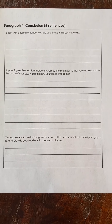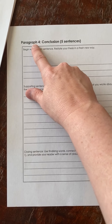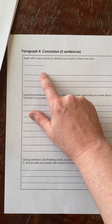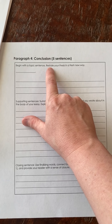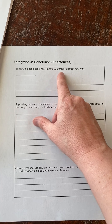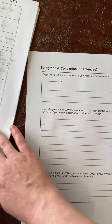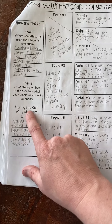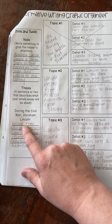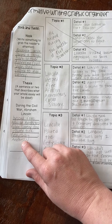I'm going to go ahead and flip the camera around. Your conclusion, paragraph 4, is going to look like this. Notice this first section says 'begin with a topic sentence.' This is where we're going to restate our thesis in a fresh new way. I'm going to use my graphic organizer and look at my thesis, which says: 'During the Civil War, Abraham Lincoln helped free African Americans from slavery and issued the Gettysburg Address.'